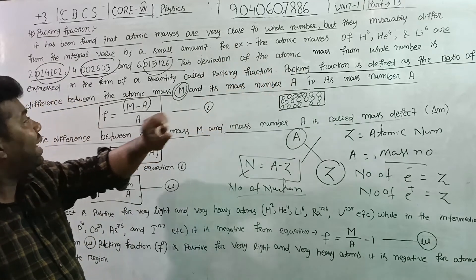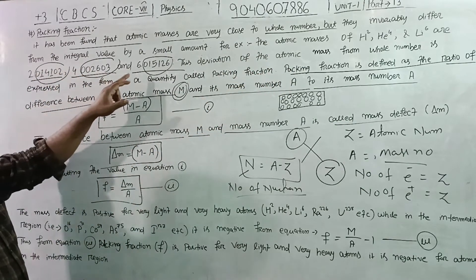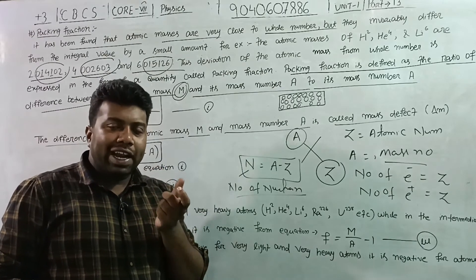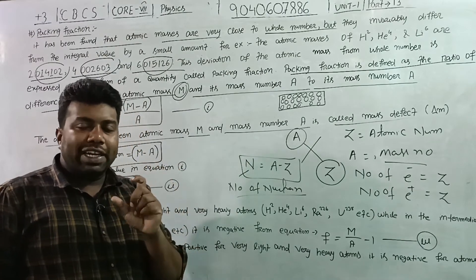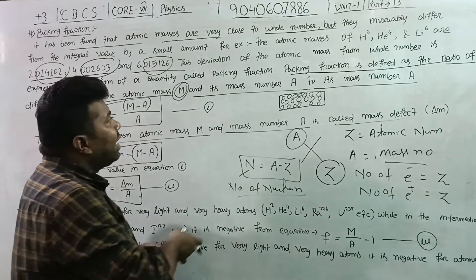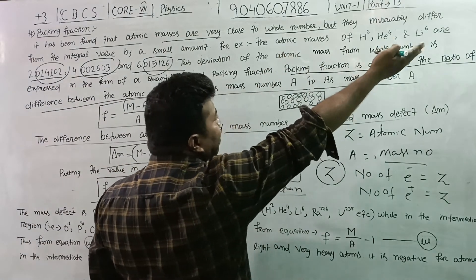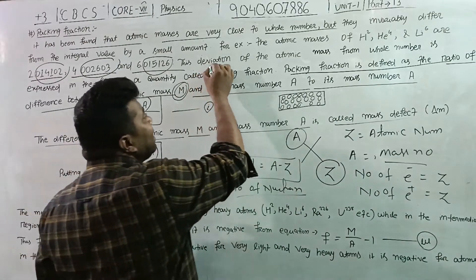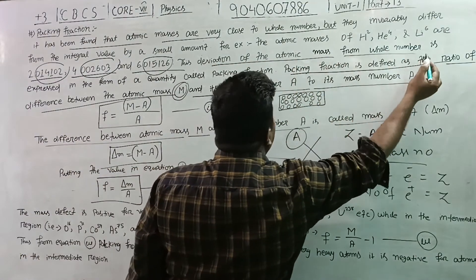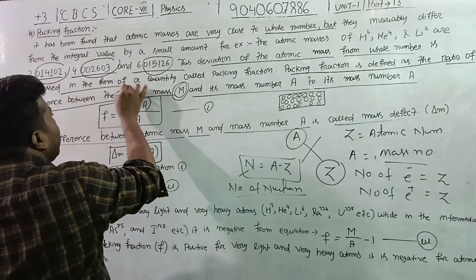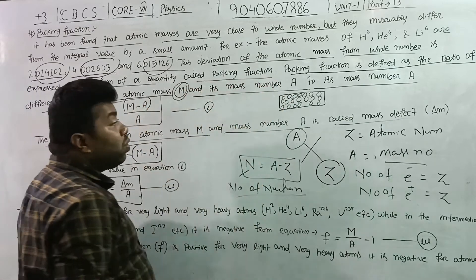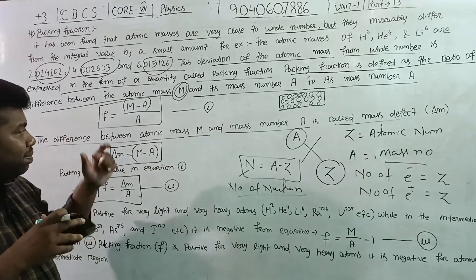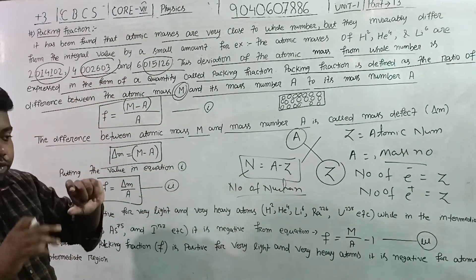Atomic masses invariably differ from the integer value by a small amount. For example, the atomic masses of hydrogen, helium, and lithium deviate slightly from whole numbers. This deviation of the atomic mass from the whole number is expressed in terms of the quantity called packing fraction.